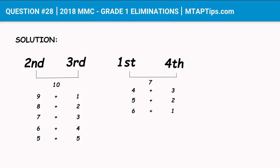Let's look at the first option for the first and fourth monkey: four and three bananas. We'll compare it against the other side. If the first monkey ate four, could the second and third monkey have eaten nine and one? No, because the first monkey must have eaten the most, so the second monkey could not have eaten nine. The same applies to eight and two, seven and three, six and four, and five and five. So four and three for the first and fourth monkeys is not correct.